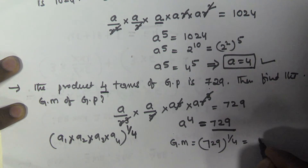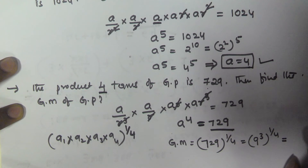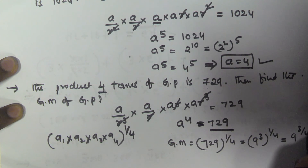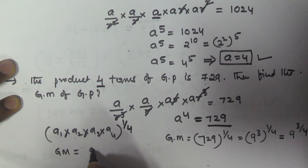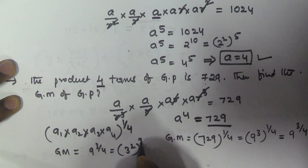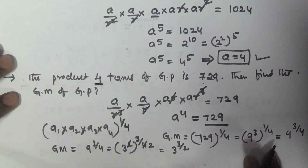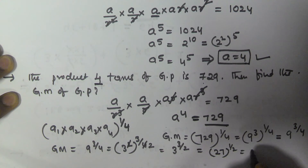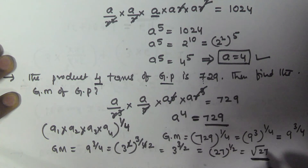Now 729 can be written as 9³, so GM = (9³)^(1/4) = 9^(3/4). Since 9 = 3², we get 3^(2 × 3/4) = 3^(3/2). This equals 27^(1/2), which is √27. So the geometric mean of four terms in geometric progression whose product is 729 is √27.